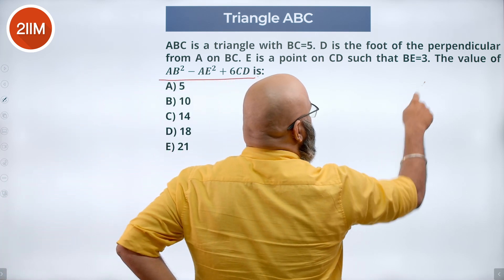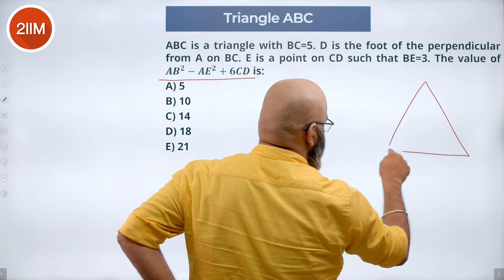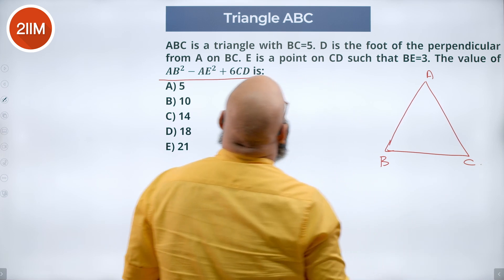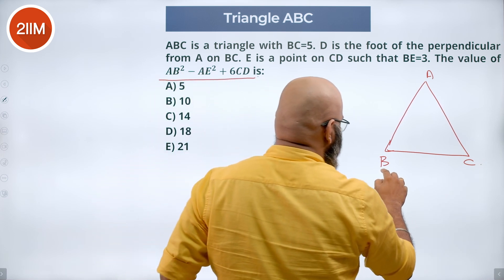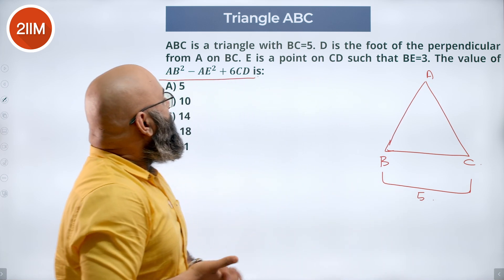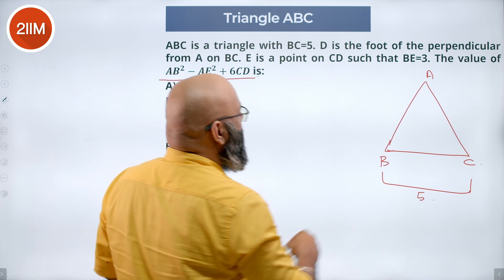So we know ABC is a triangle. Let's say this is A, B, C such that BC is equal to 5. So this entire part is 5. D is a foot on the perpendicular from A on BC.